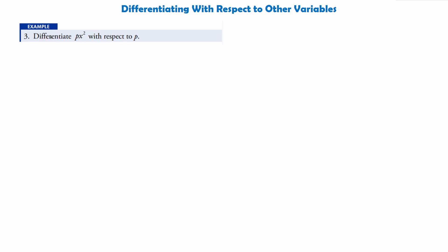In this final example we are asked to differentiate p x squared with respect to p. Now this time we have two variables — p and x. Because we are differentiating with respect to p, we're going to have something of the form a p to some power. When differentiating with respect to a certain variable, all other variables are just treated as constants. So p x squared is the same as just x squared times p, where we have it of the form a p to the n. We bring the power down to the front — bring 1 down — and multiply it by x squared, which is just a constant.